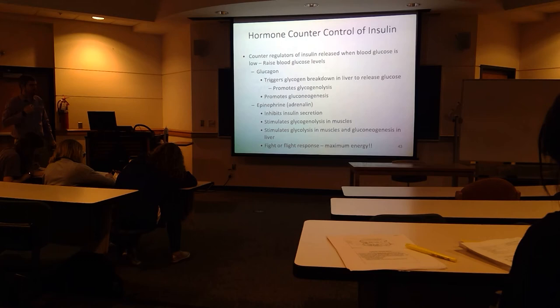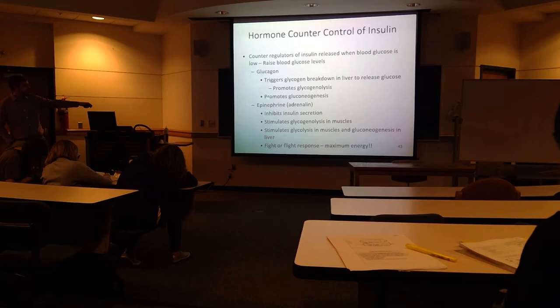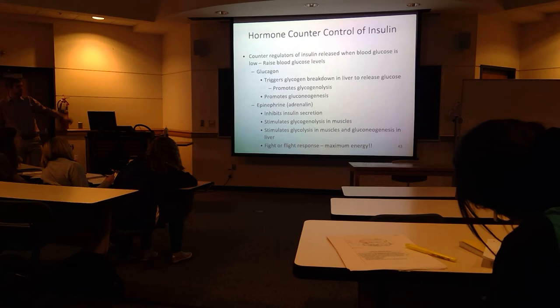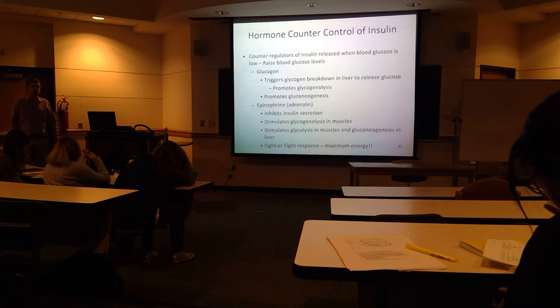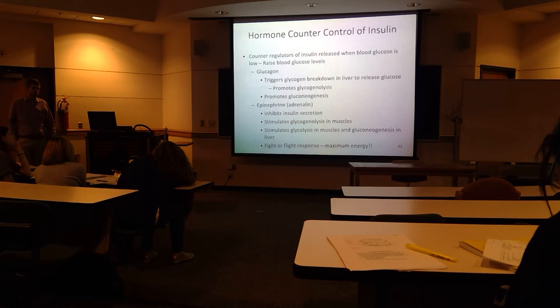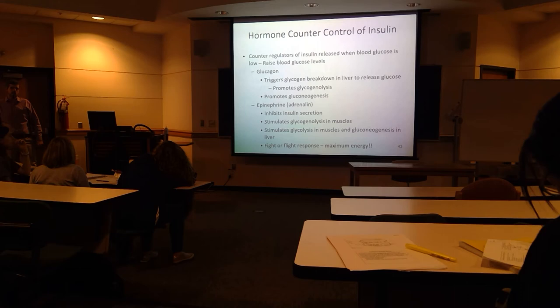Glucagon promotes gluconeogenesis in the liver and also triggers glycogen breakdown in the liver to release glucose. When glucagon is released, the liver is going to produce as much glucose as it can — by breaking down glycogen through glycogenolysis and doing gluconeogenesis to make more glucose — because the liver's job when blood glucose is low is to excrete glucose into the blood to raise the blood glucose level.